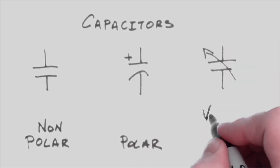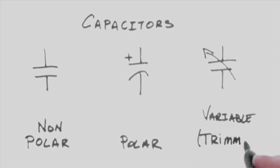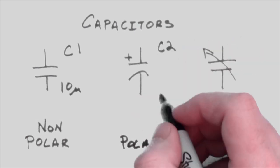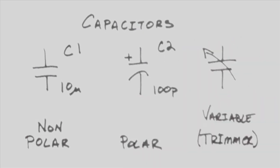Variable capacitors, also known as trimmers, will be a capacitor symbol with an arrow drawn through it. The designator is the letter C, while values are shown in farads, along with letters like U and P to indicate micro- or picofarads.